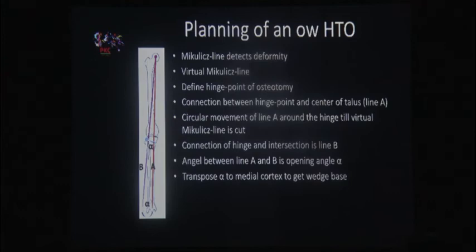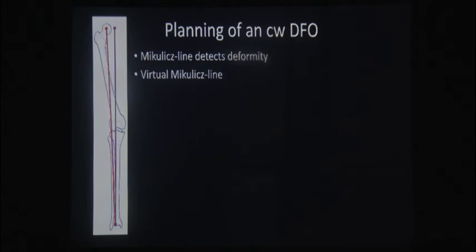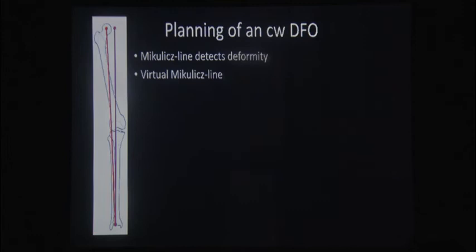Roughly speaking, one degree corresponds to approximately one millimeter, but this is not precise enough to rely on as a rule, so we have moved away from that approximation. The wedge base height measured on the calibrated X-ray gives you your osteotomy gap. The same principle applies to distal femoral osteotomy (DFO), approached from the opposite direction — starting at the ankle joint and going to the proximal femoral center, defining the hinge point again.